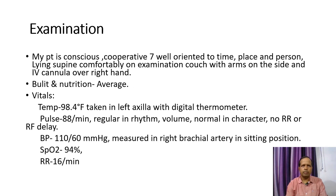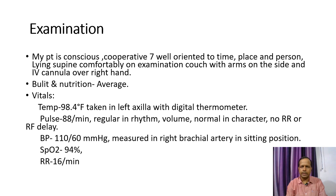Coming to examination: My patient is conscious, cooperative, and well-oriented to time, person, and place, lying supine comfortably on the examination couch with arms on the side and IV cannula over the right hand. Built and nutrition are average. Vitals: Temperature is 98.4°F taken in the left axilla with a digital thermometer. Pulse is 88 per minute, regular in rhythm, normal volume and character, no radioradial or radiofemoral delay. Blood pressure is 110/60 mmHg measured in the right brachial artery in the sitting position. Oxygen saturation is 94% at room air and respiratory rate is 16 breaths per minute.